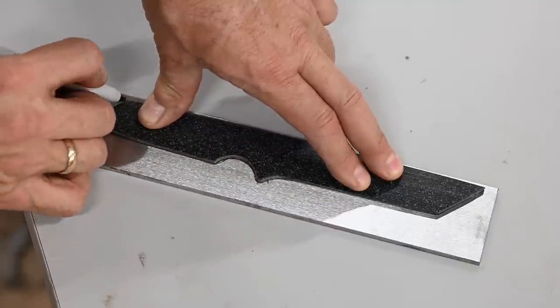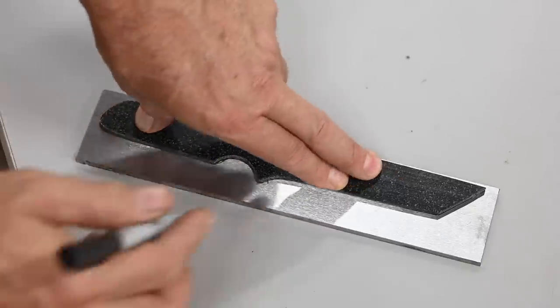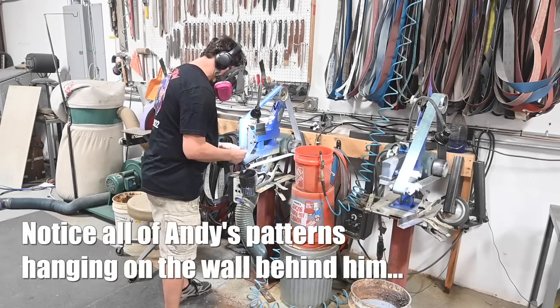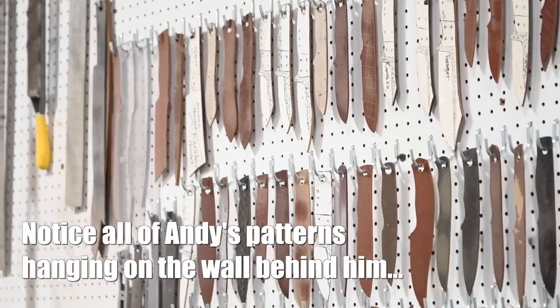Anyway, the idea is that anytime you're making more than one copy of a knife, you can easily grind a pattern from a thin piece of micarta, a plastic like Delrin, or even a piece of aluminum. Then you just drill a hole in it and hang it on the wall.